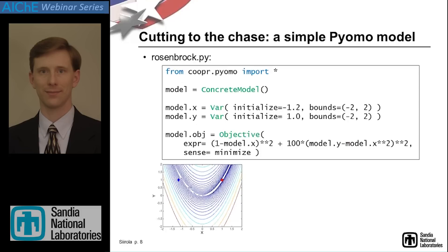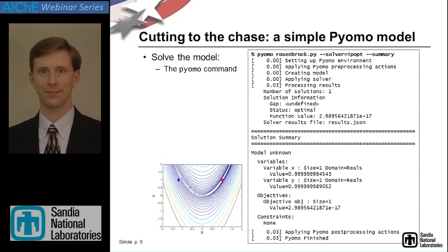When we talk about a model, we talk about an object or entity, and then we hang off of that entity modeling constructs: sets, parameters, variables, constraints, and so on. Here's a simple model — the Rosenbrock test function in 2D. This is the complete model. At the top there's some boilerplate. We define a model, define two variables X and Y that are bounded and have initial values, and then define the objective and say we want to minimize it. To solve it, we call a script named PyOMO, pass it the model and tell it which solver we want, and get the results.